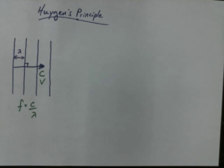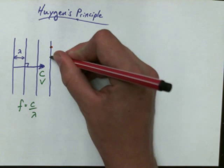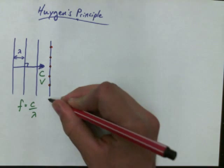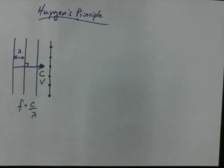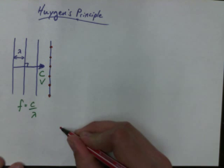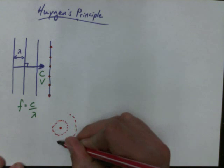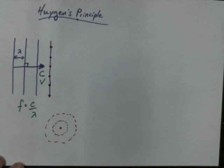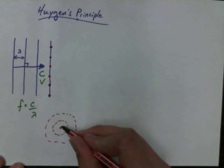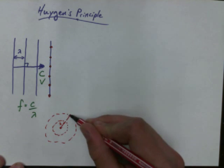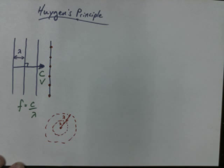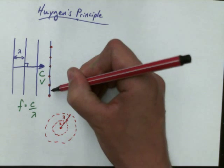This is where Huygens comes in. Huygens says it's not just a simple front — it's not quite as straightforward as that. Huygens conceptualized a wave front as being made up of a whole bunch of individual point sources for a wave. If you drop a pebble into a pond, that would be a point source for a wave, and the wave would go out in concentric circles. It shouldn't be so crazy to think that a wave is really made up of a whole bunch of point sources.